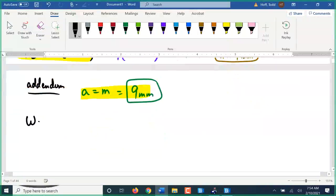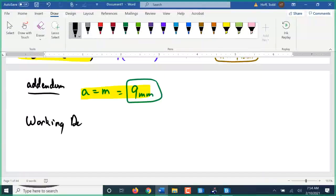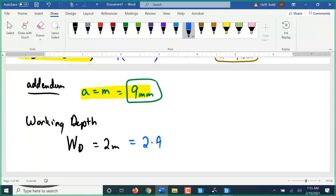Working depth. We have to be careful. Capital WD is the whole depth, that's the complete depth of the tooth. Working depth is little d subscript W. And the working depth is just 2 times the module. Two times the 9 millimeters is 18 millimeters. So in a metric spur gear, the working depth is always twice the addendum. Makes sense. If the two gears mesh together, they should have the same addendum.